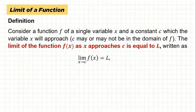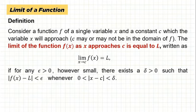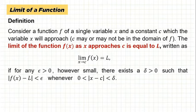This is the notation for the limit. We read it as: the limit of f(x) as x approaches c is equal to L. This will happen if for any epsilon greater than 0, however small, there exists a delta greater than 0 such that the absolute value of f(x) minus L is less than epsilon whenever the absolute value of x minus c is between 0 and delta.